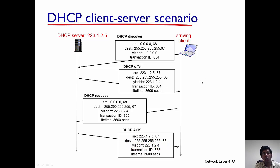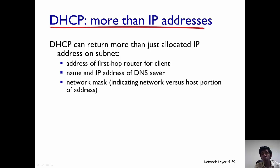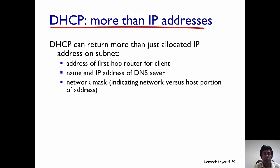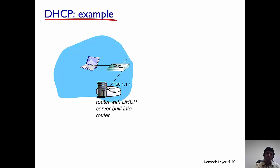DHCP's primary job is to provide IP addresses, but it does more than that. DHCP can also provide the address of the first-hop router for a client, the name and address of the DNS server, and the network mask — basically the subnet mask, the subnet portion of the network. So we've looked at the discover, offer, request, and response messages.